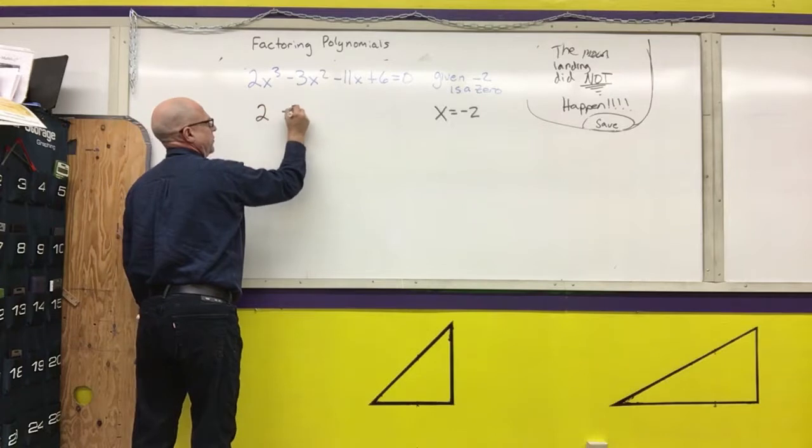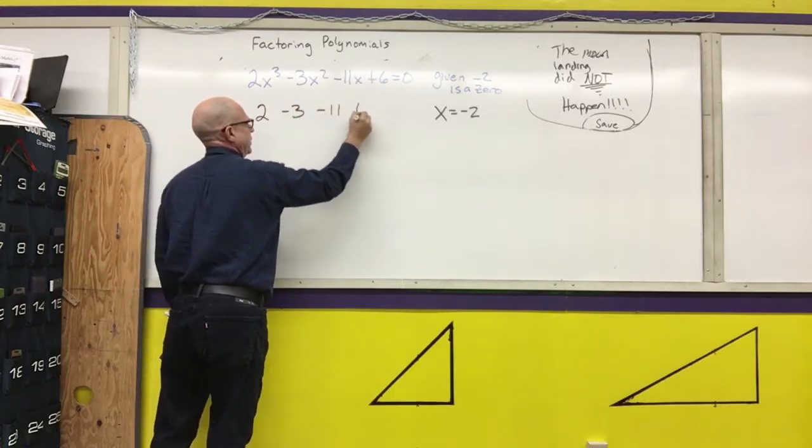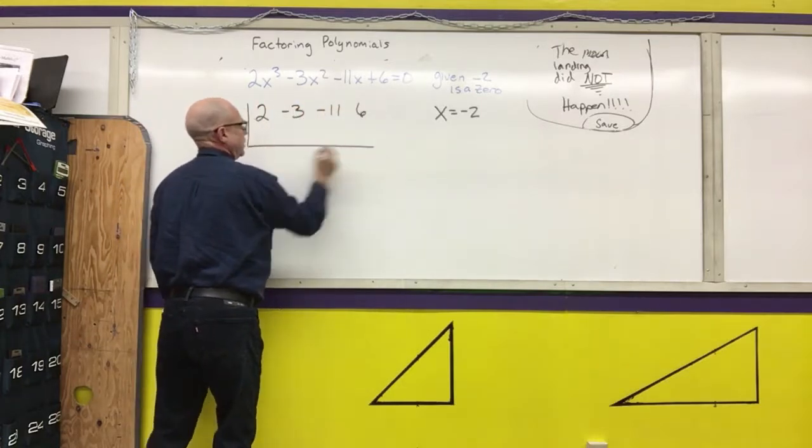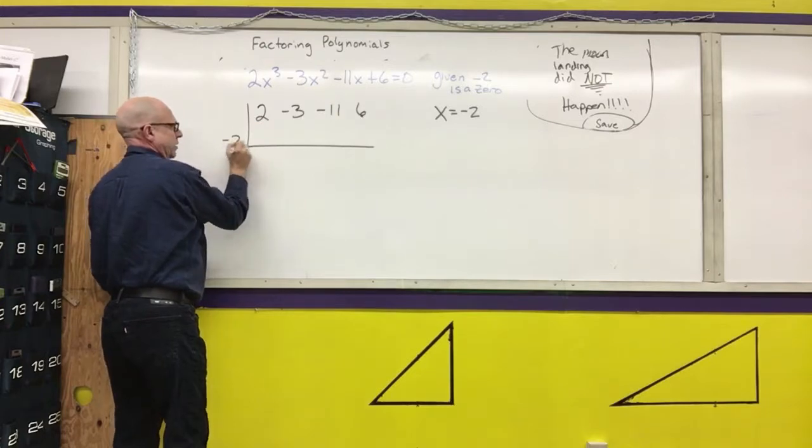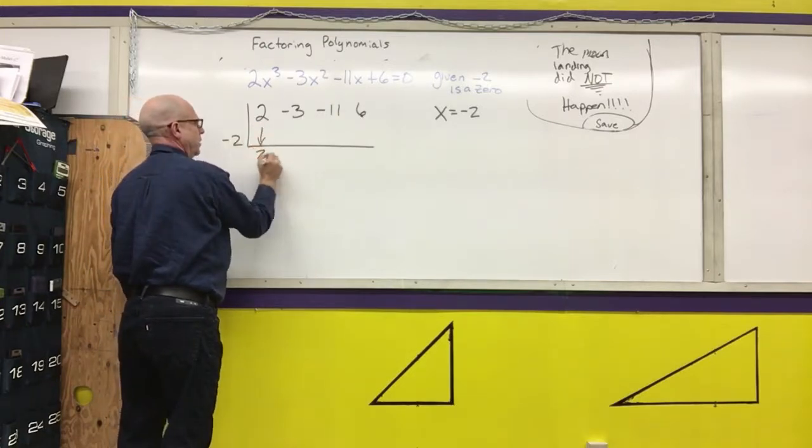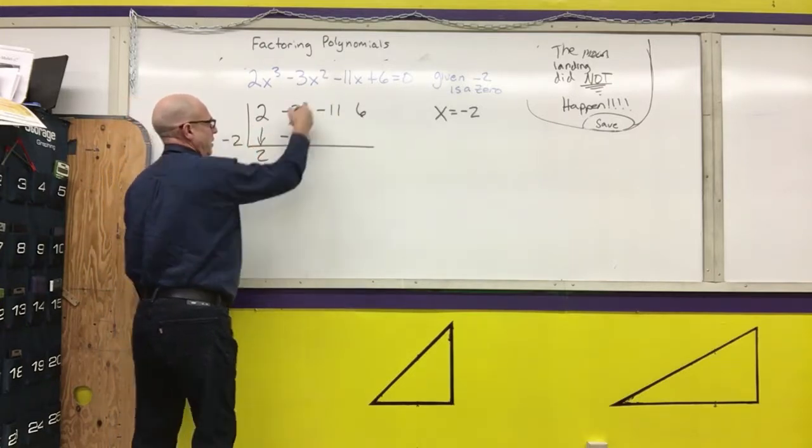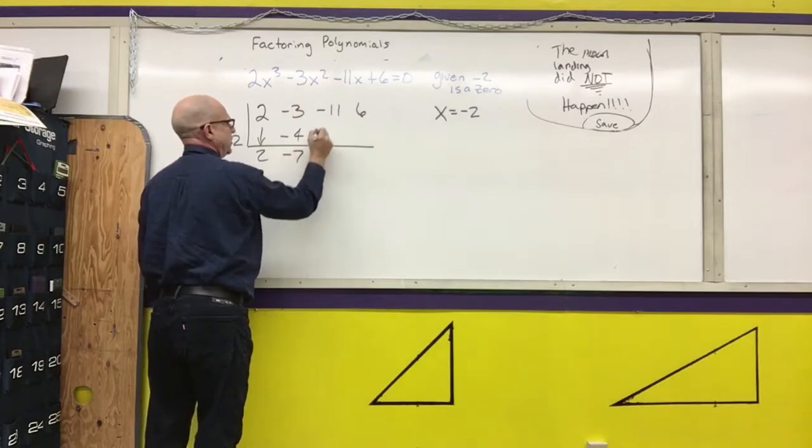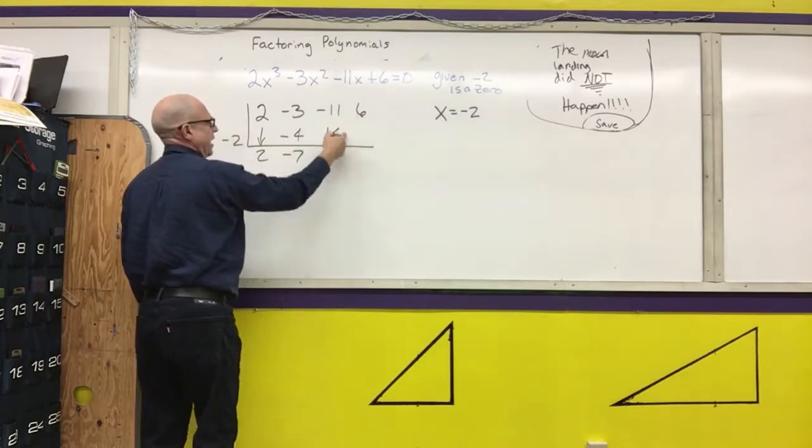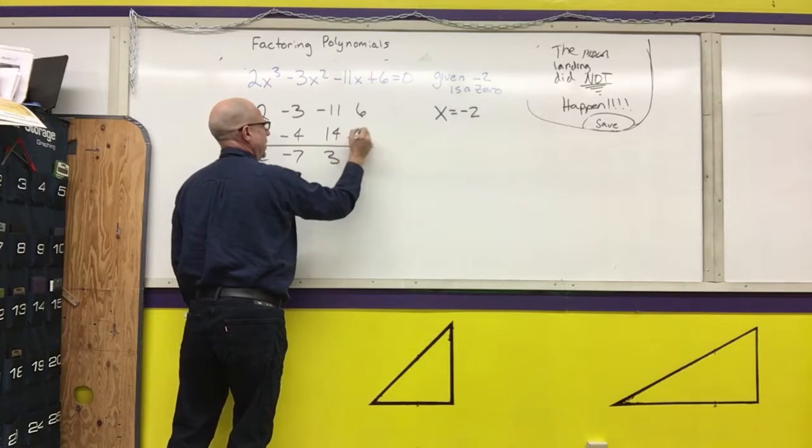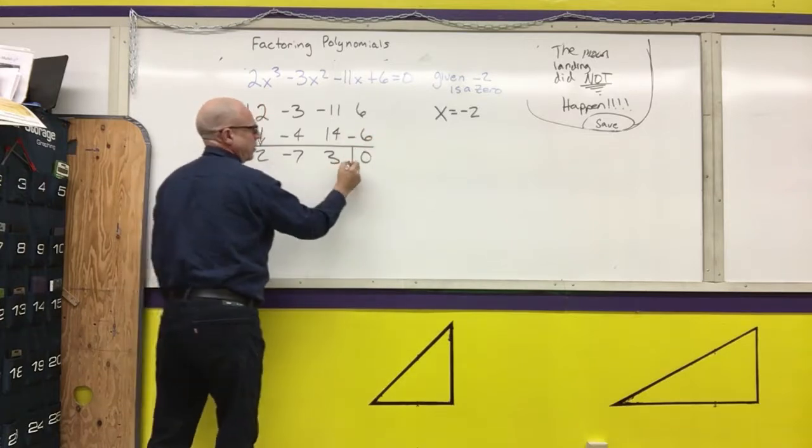2, negative 3, negative 11, 6. Put the negative 2 outside. Copy. Multiply. Add. Multiply. Add. Multiply. Add.